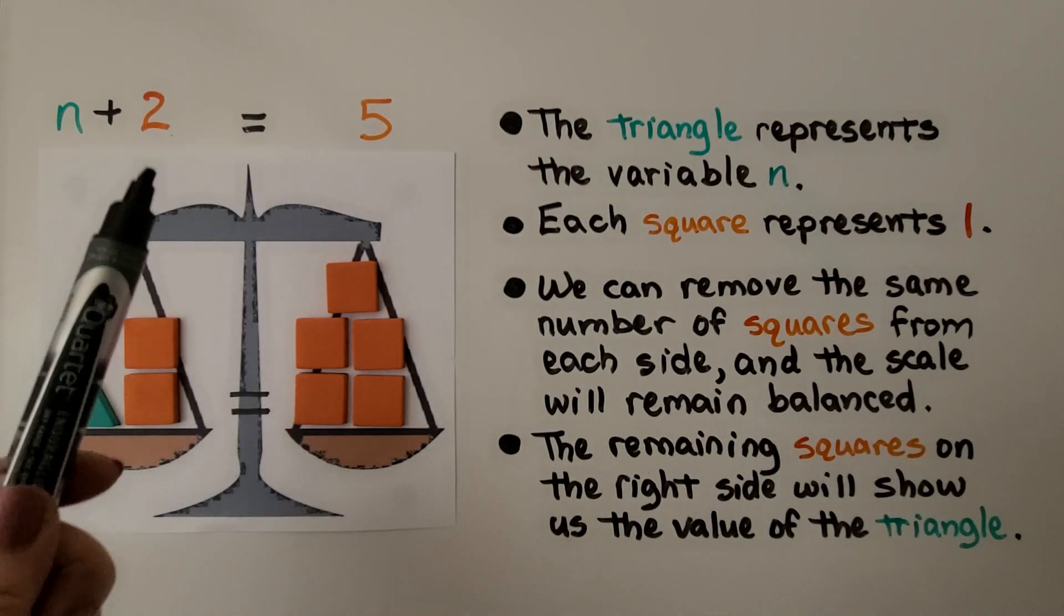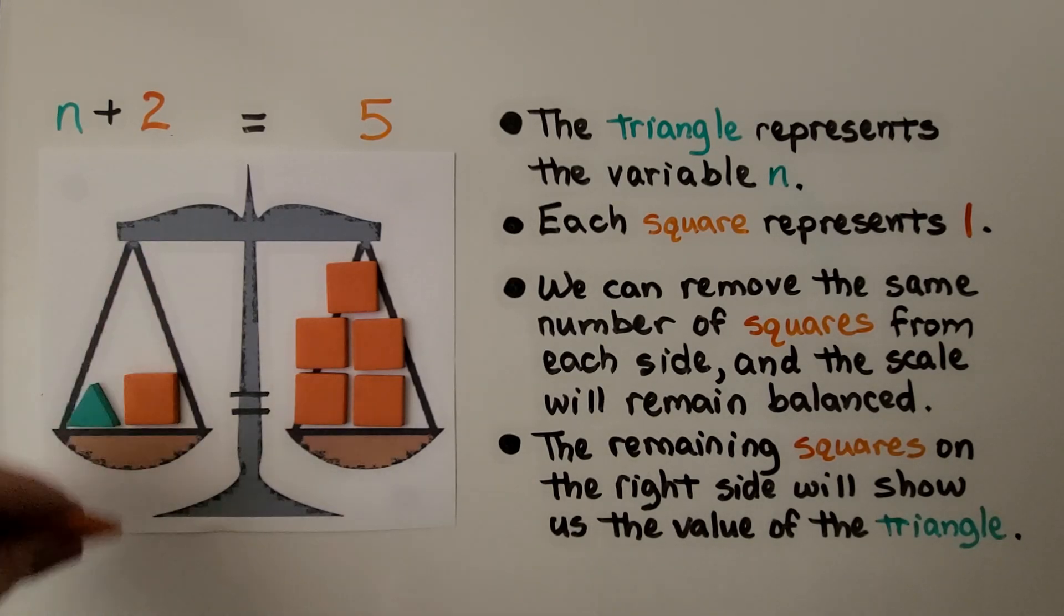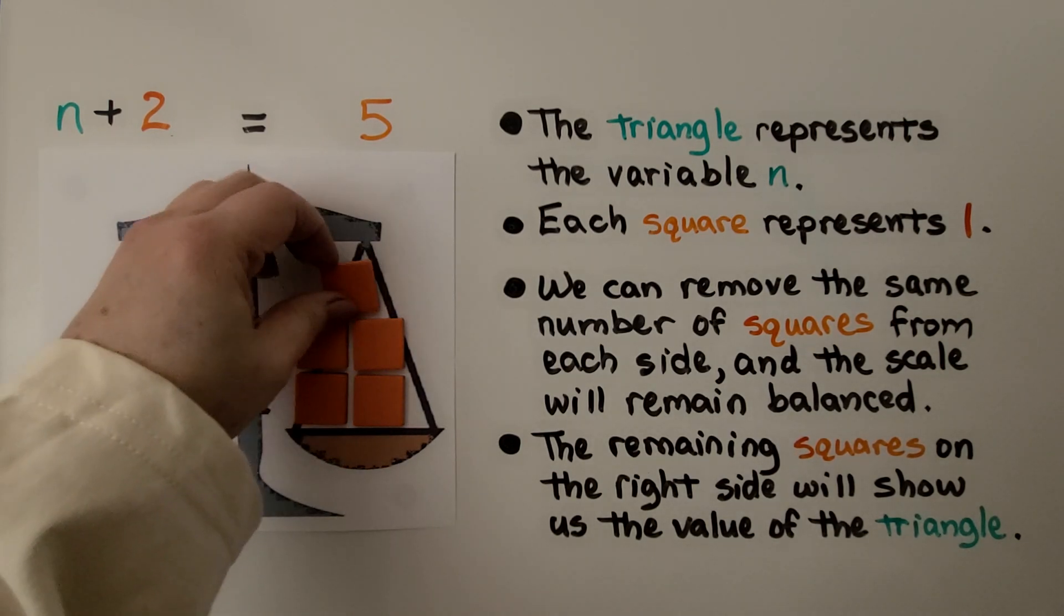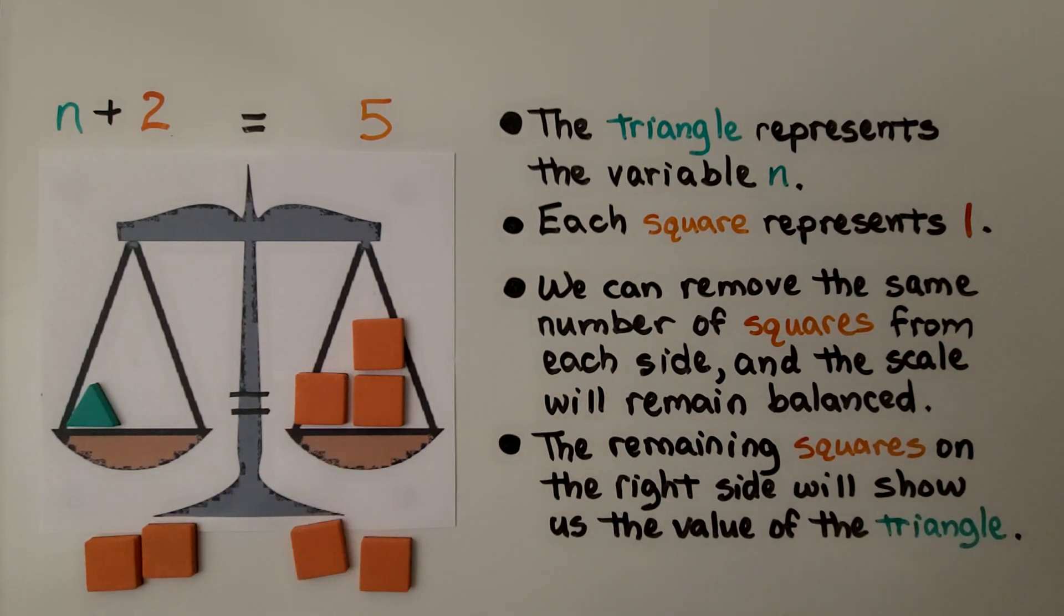Here we have the equation n plus 2 is equal to 5. This triangle represents the variable n, and each square represents 1. We can remove the same number of squares from each side, and the scale will remain balanced. We can take these 2 away, and we can take 2 from this side. The remaining squares on the right side will show us the value of the triangle. It stays balanced. We took the same amount away from each side. One triangle is equal to 3 squares. We know n is equal to 3.